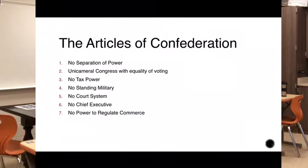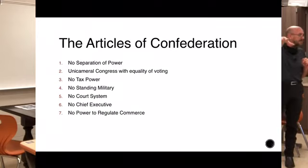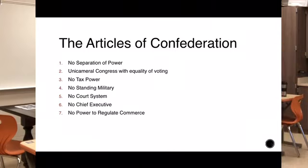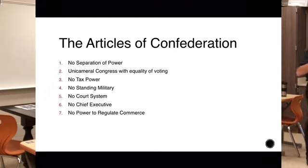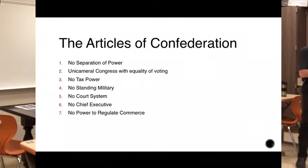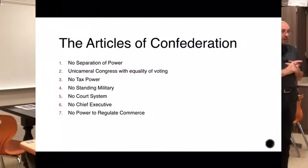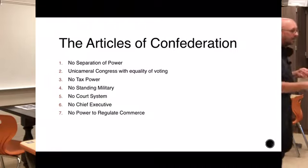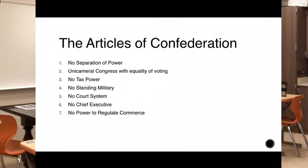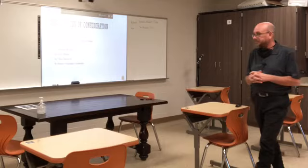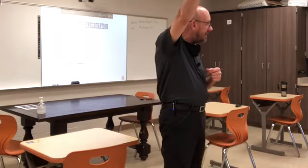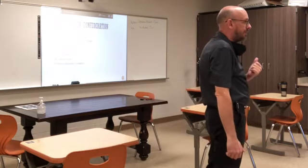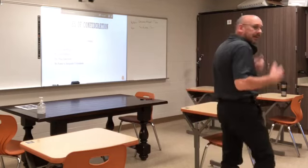There was no court system at all — only state courts, no federal court system, so they couldn't rule a law unconstitutional. No chief executive, no president. No power to regulate commerce — business between states. They couldn't regulate money, so every state was making their own money, and every time you crossed a border you'd have to change your money out. They couldn't regulate measurements — how much a gallon was, or how much a pound was, or how big an inch was. States could also put taxes on people coming in from other states, and the federal government couldn't stop it.